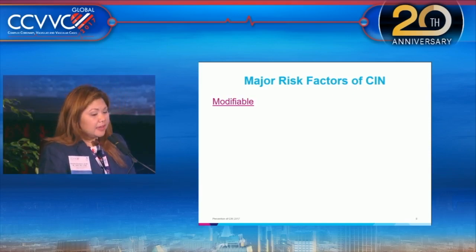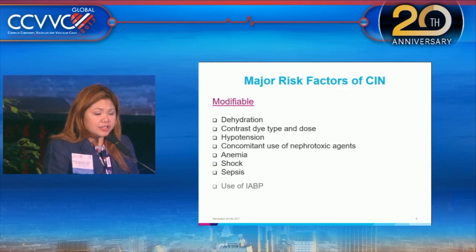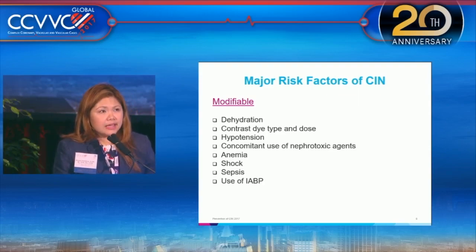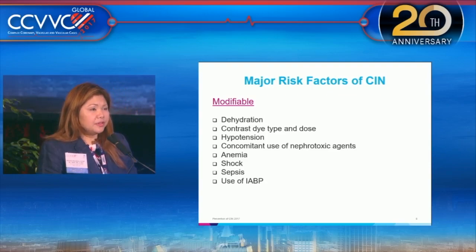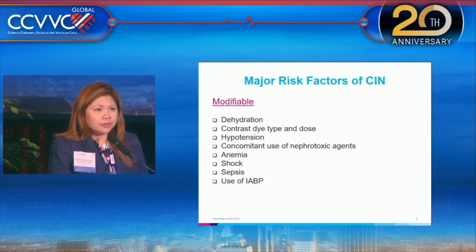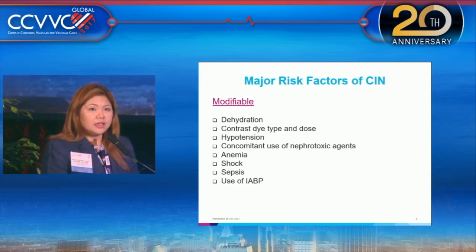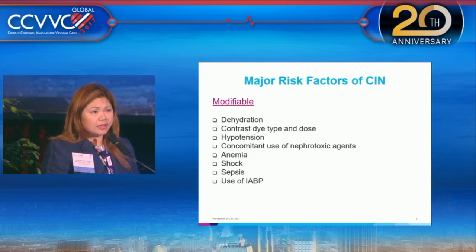Major risk factors that are modifiable — things we can take care of — include dehydration, contrast dye type and dose, hypotension, concomitant use of nephrotoxic drugs, NSAIDs, anemia, patient being in shock, sepsis, and the use of an intra-aortic balloon pump. We include the intra-aortic balloon pump because if it's placed electively, it signifies the patient may have hemodynamic instability during PCI and severe atherosclerotic disease requiring hemodynamic assistance.